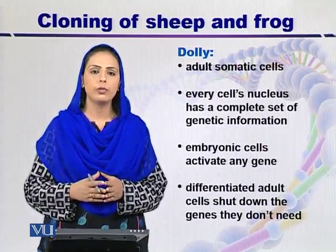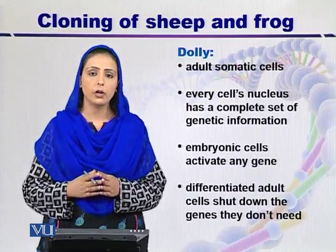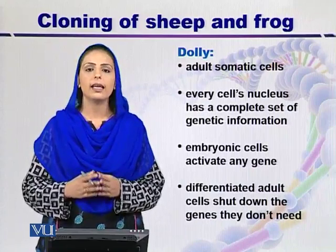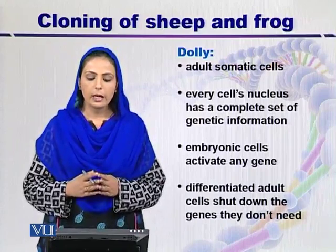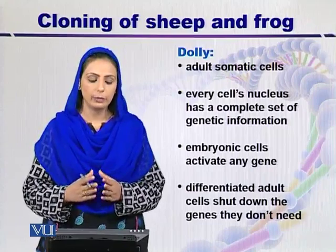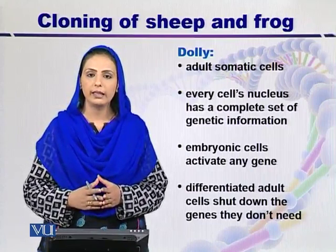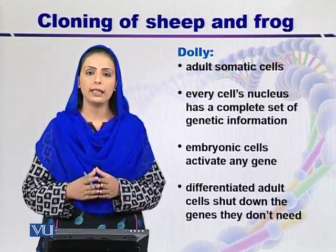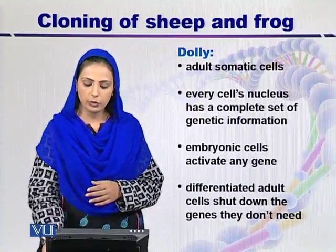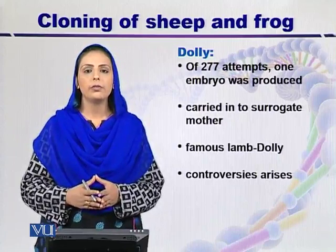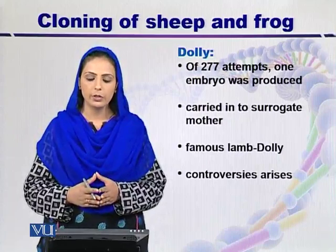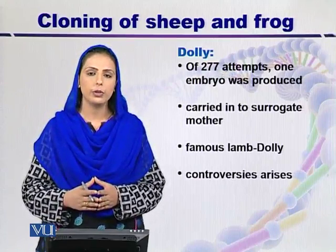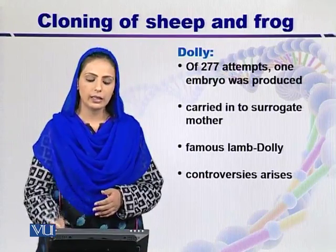Wilmut and Keith also performed experiments on sheep by using adult somatic cells for the first time, and after the production of this sheep a number of ethical issues arose. Every cell nucleus has complete genetic information, and embryonic cells have the ability to activate or hold any gene to maintain balance, checking both negative and positive feedback. Wilmut and Keith performed 277 attempts, and of those only one embryo was successfully carried by a lamb mother, producing the famous lamb named Dolly. From here, controversy arose regarding the cloning technique.